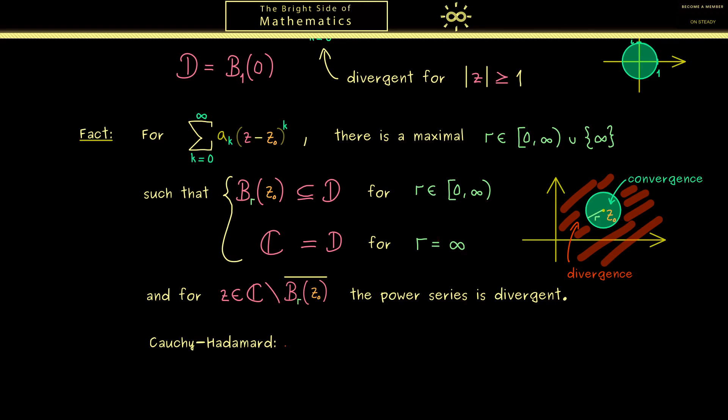Probably you already know this formula it's often called the Cauchy-Hadamard theorem. In fact this is what we have discussed in my real analysis course in part 33. And it tells you that 1 divided by r can be calculated by a limsup.